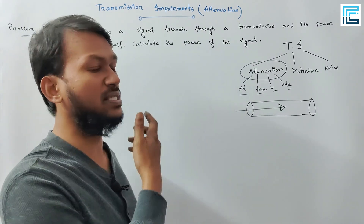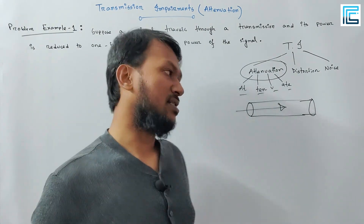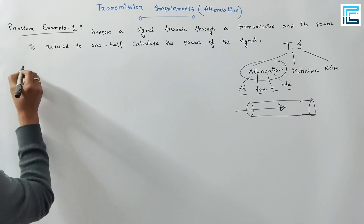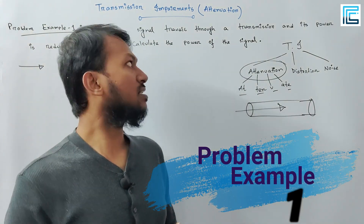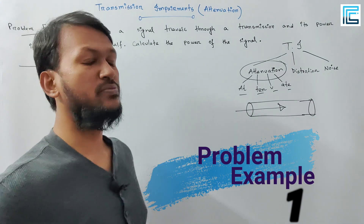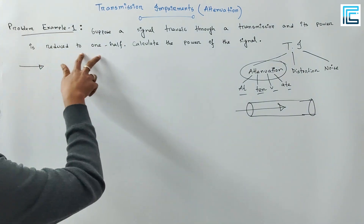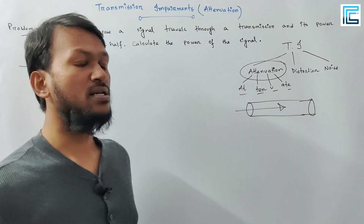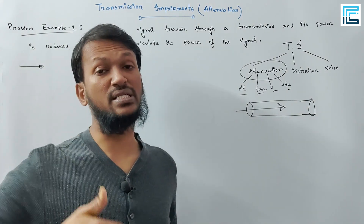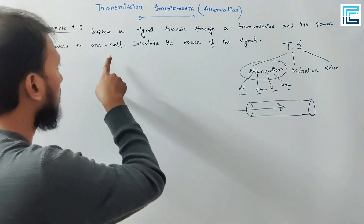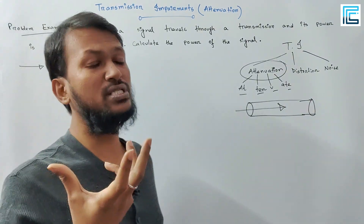Attenuation involves some math to solve. Suppose the signal travels through the transmission medium and its power is reduced to one-half. So one-half of the signal power is lost. The signal is here — that is the power of the signal.